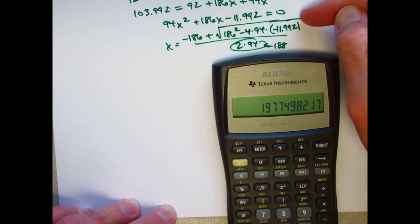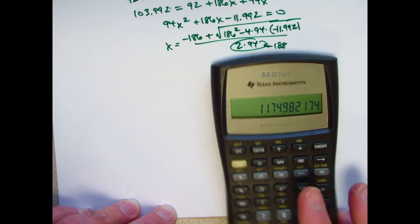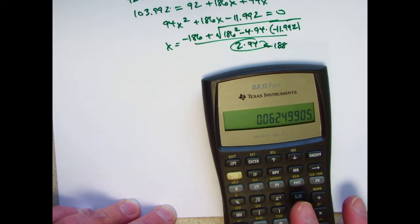So the square root is about 197.7498. Subtract 186. Divide by 188. And there's our value of x.